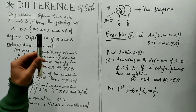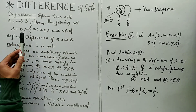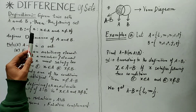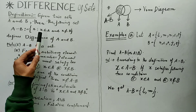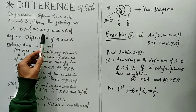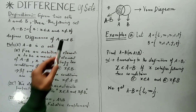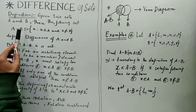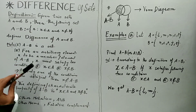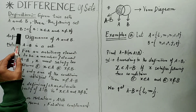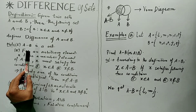Let's see what the definition of the difference of two sets tells us. A minus B is defined as the set which consists of elements X such that X must belong to A and X must not belong to B. We call this set the difference of A and B. Note that A minus B is nothing but a set.